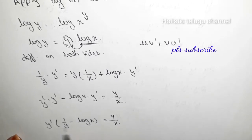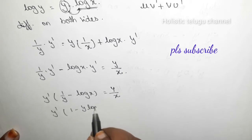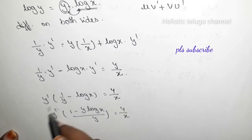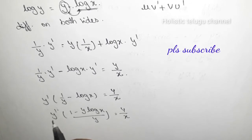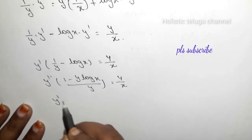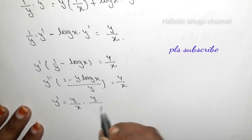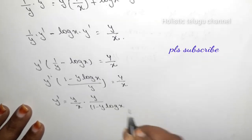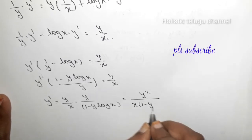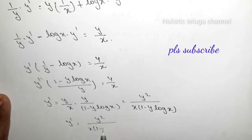Simplifying: y' · (1/y − log x) = y/x, which gives y' · (1 − y·log x)/y = y/x. Therefore, y' = y²/[x·(1 − y·log x)].